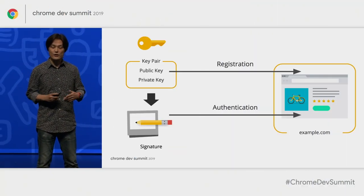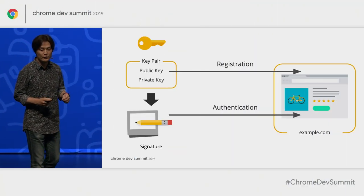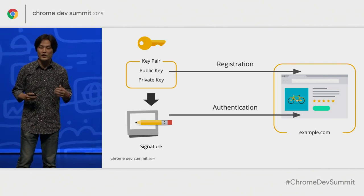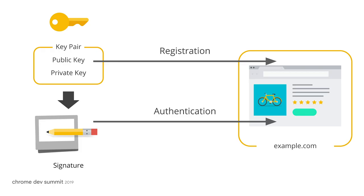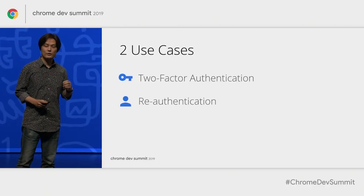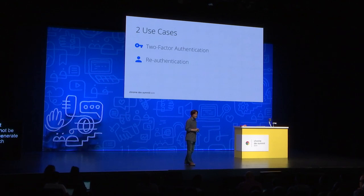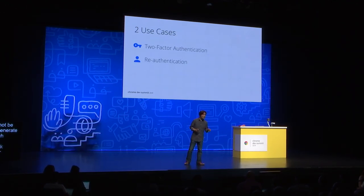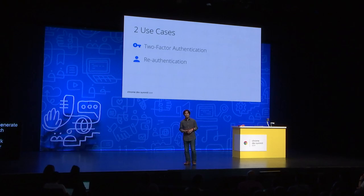In the previous session, Emily showed you how Chrome tries to ensure the user is on a genuine site. WebAuthn allows you to provide an extra layer of safety for users. Because the key pair is bound to the website's origin, even if a user ends up on a phishing website, that phishing website will not be able to make the user generate a valid signature. I would like to talk about two primary user experiences using WebAuthn: two-factor authentication and re-authentication.